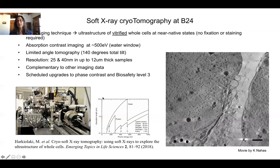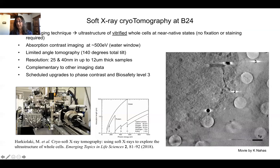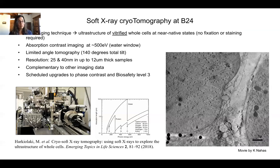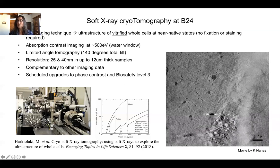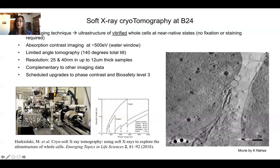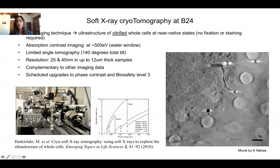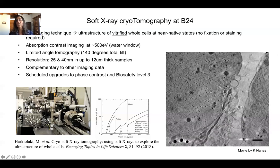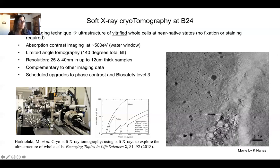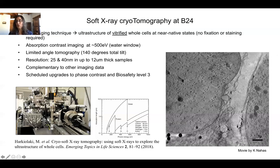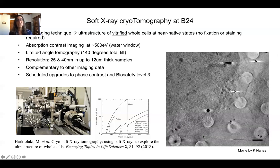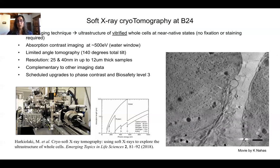Here you see data from our student Kamal, a joint student with a group in Cambridge. You're looking at two cells — one nucleus here, another here, and the cytoplasm. Kamal studies Herpes Simplex Virus 1, and within the nucleus you can see quite a lot of spots — the little viral capsids — as well as blebbing of the nucleus and the cytoplasm. This is the kind of information you can achieve with X-ray tomography.